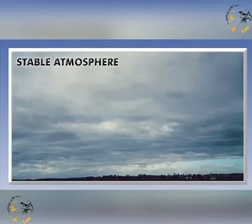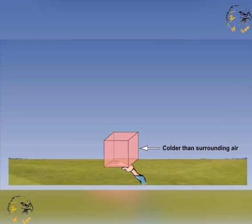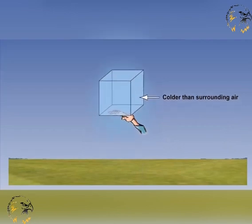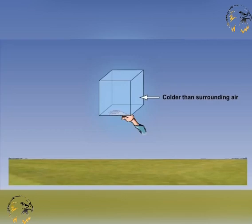Now let's consider the weather when we have a stable atmosphere. Our parcel of air in this situation does not inherently want to rise when nudged upwards. If forced to rise, the parcel of air will cool more rapidly than the surroundings, making it denser and heavier. Therefore, when the lifting force is removed, the parcel will want to return to its original position. The atmosphere is said to be stable when this condition exists — that is, it is very resistant to vertical uplift.